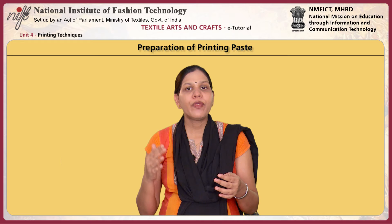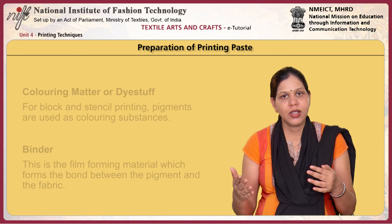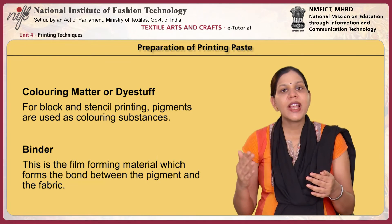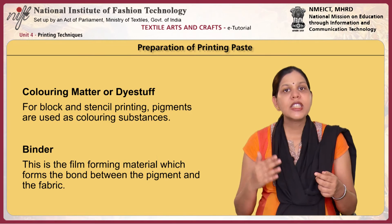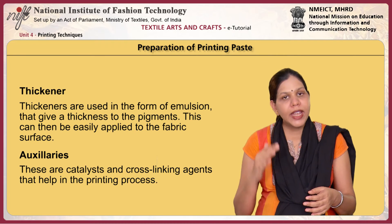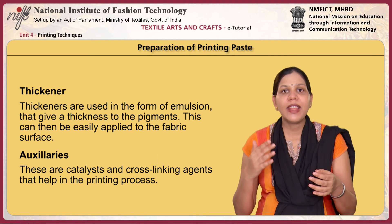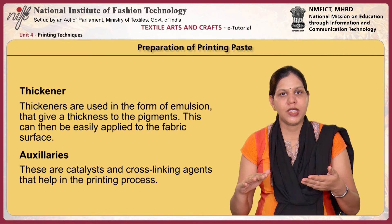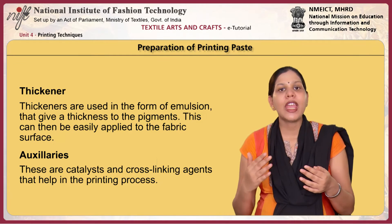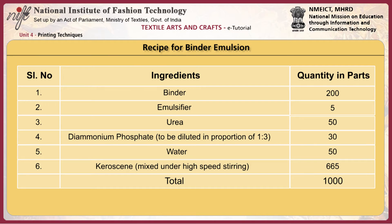The next part of block printing is the preparation of the printing paste. For block and stencil printing, pigments are used as colouring substances. A film-forming material forms the bond between the pigment and the fabric. Thickeners are used in the form of emulsion that give thickness to the pigments so they can be easily applied to the fabric surface. There are also catalysts and cross-linking agents that help in the printing process. A binder emulsion is first prepared and later mixed with the pigment to create the printing paste.